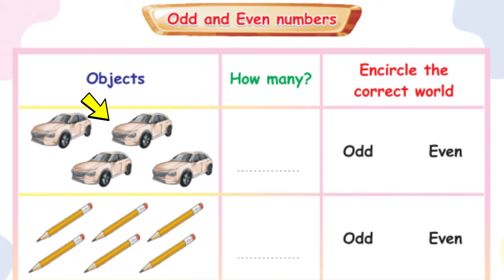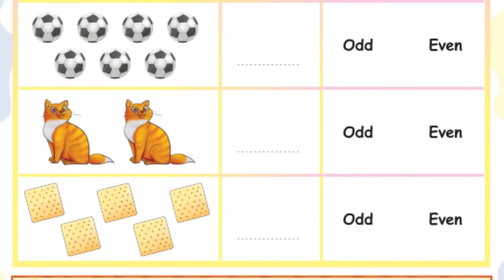Let's count the given cars: one, two, three, four. The number four — is this an odd number or an even number? This is an even number. What about the given pencils? One, two, three, four, five, six. Six is an even number. What about the given footballs? One, two, three, four, five, six, seven. Seven is an odd number.